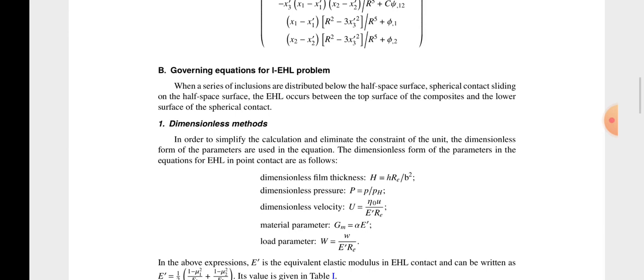Dimensionless velocity U is equal to eta zero mu upon E dash Re. Material parameter GM is equal to alpha E. Load parameter W is equal to W upon E dash Re.